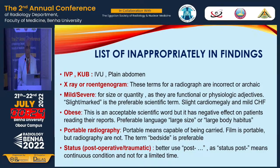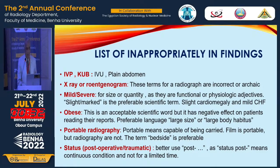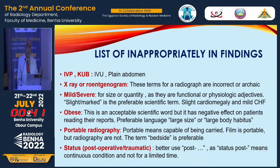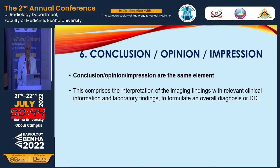Terms like 'lucent' should not be written; use proper descriptive terminology. 'Inhomogeneous' is not acceptable — write 'homogeneous' or 'heterogeneous.' Use 'mild,' 'fine,' or 'coarse' as appropriate. Avoid 'early' as a descriptor — such as 'early osteoarthritis' or 'early spondylosis' — and replace with 'mild form.' Also avoid terms like 'status post-operative' and 'obese' when writing findings.